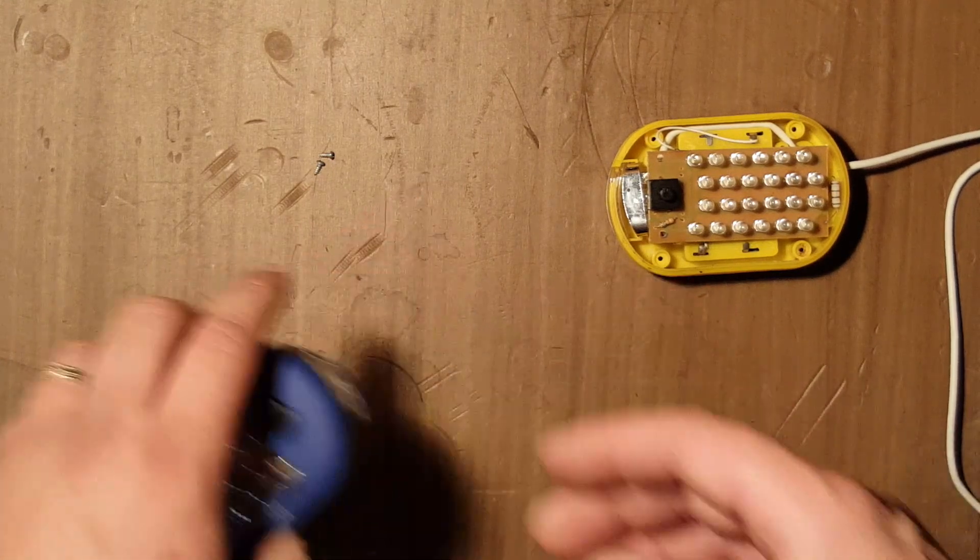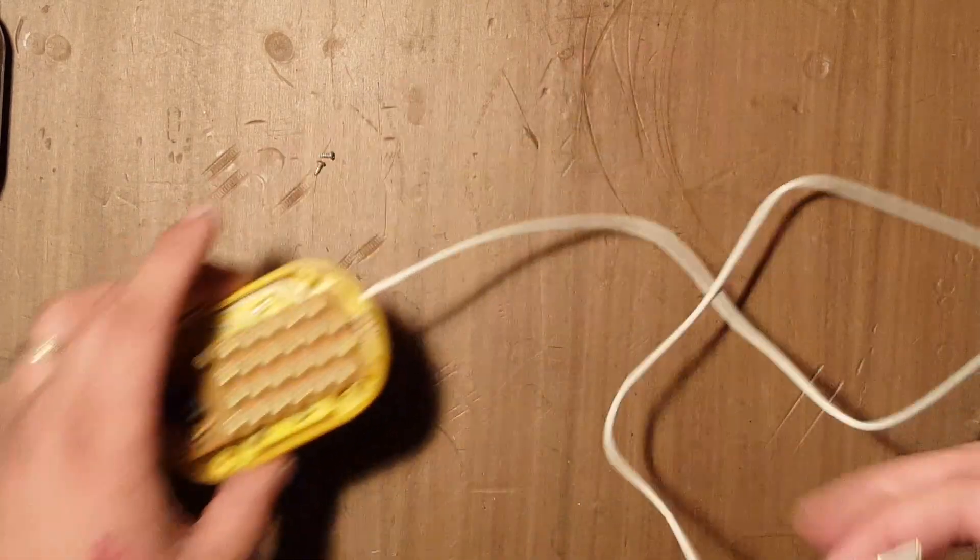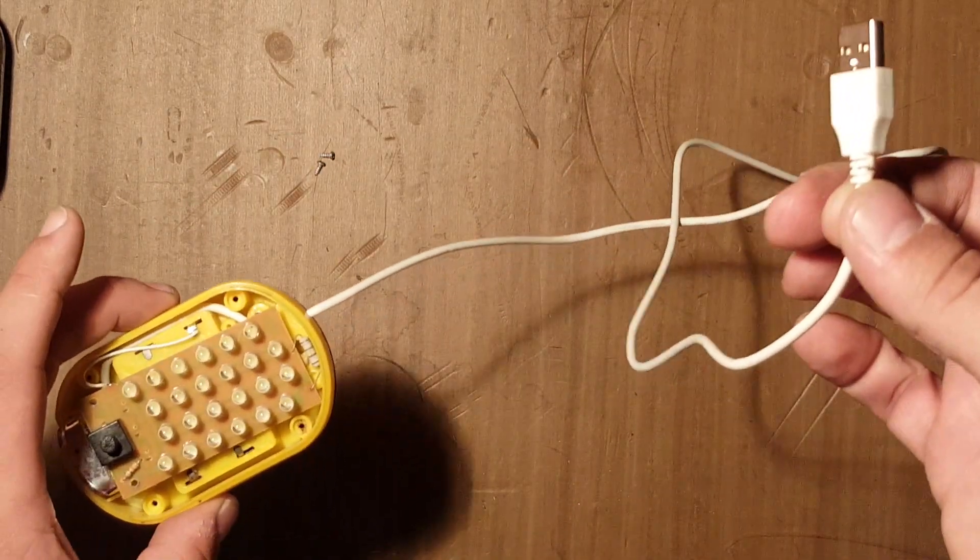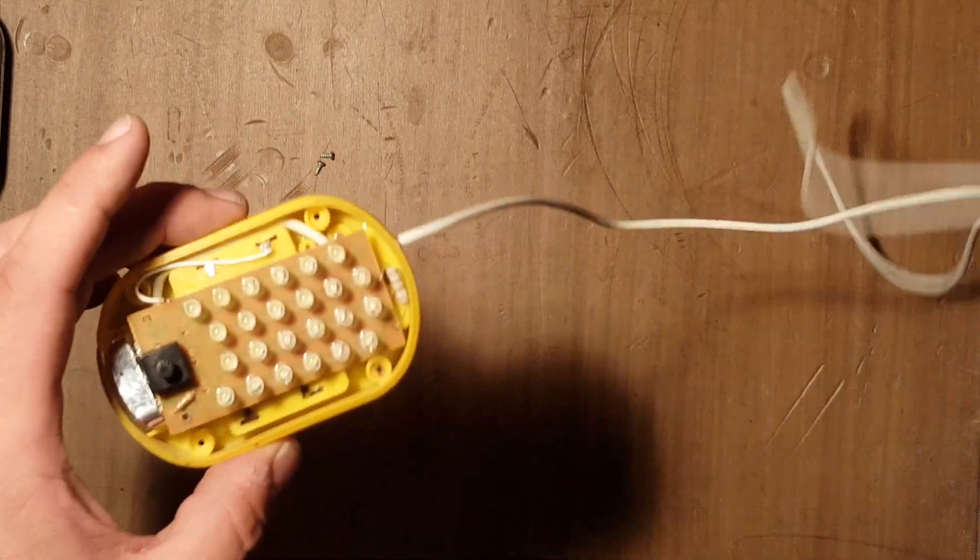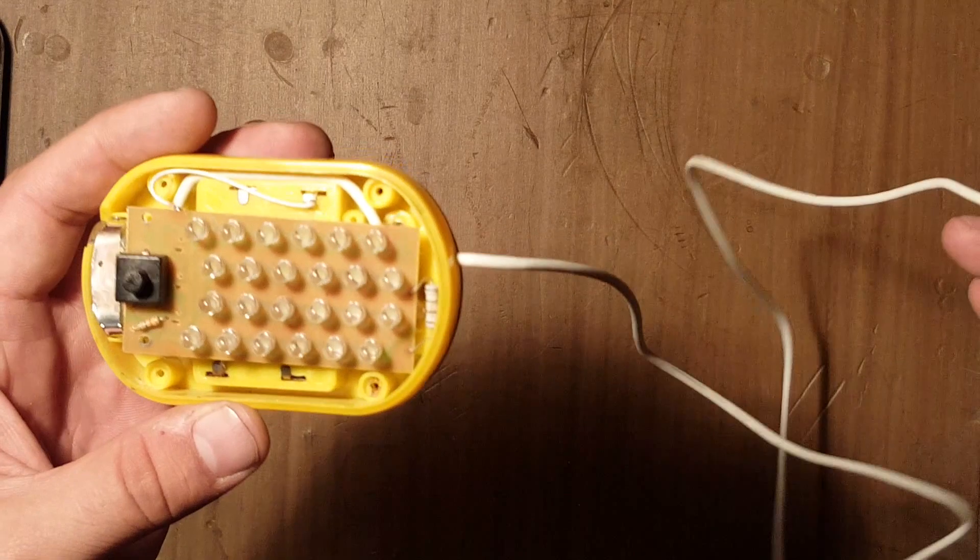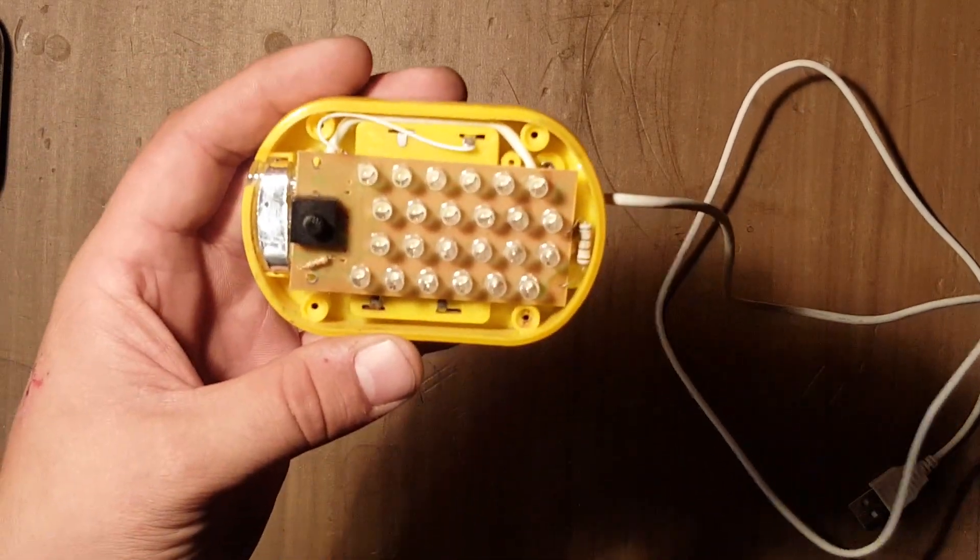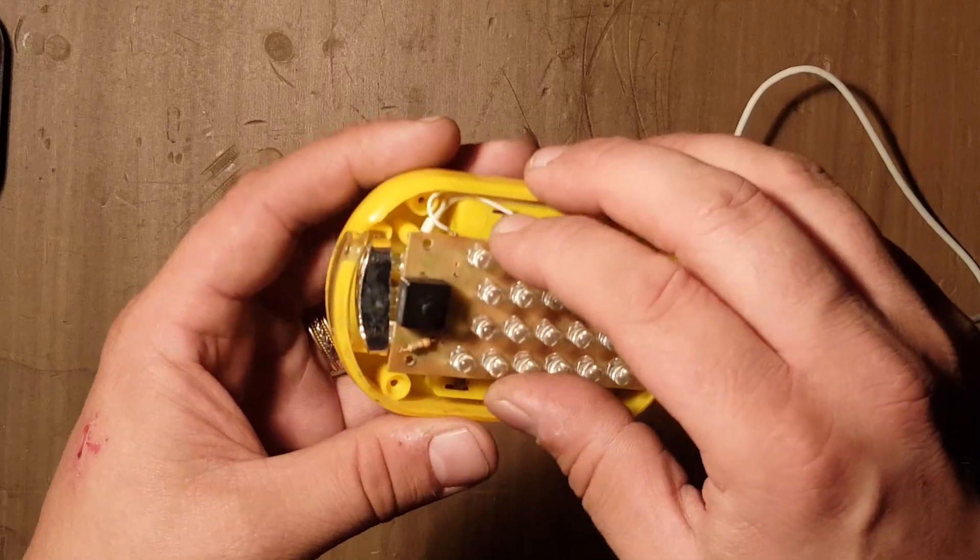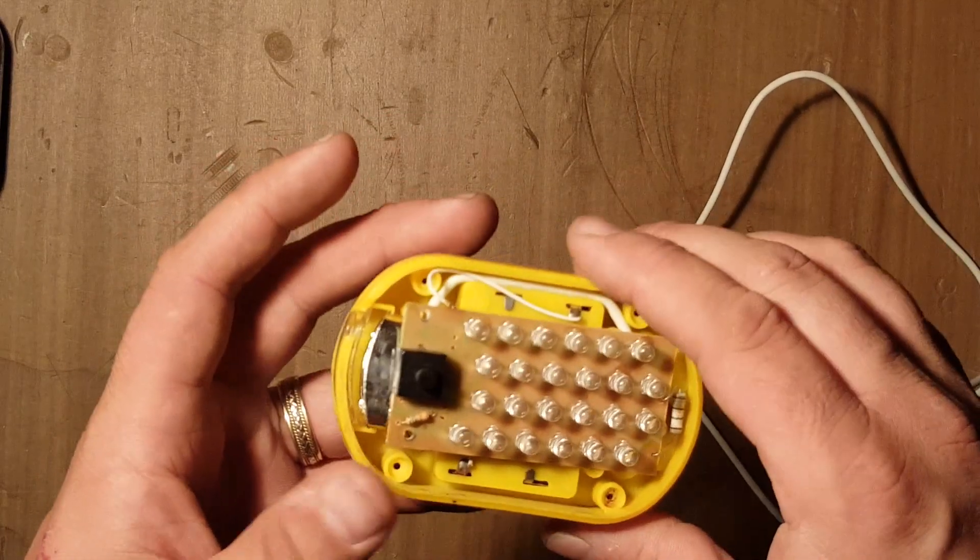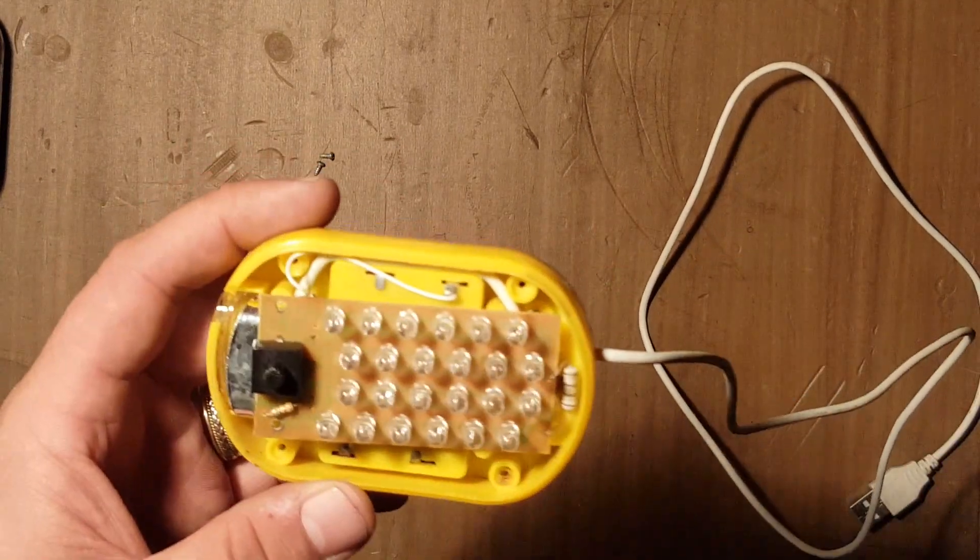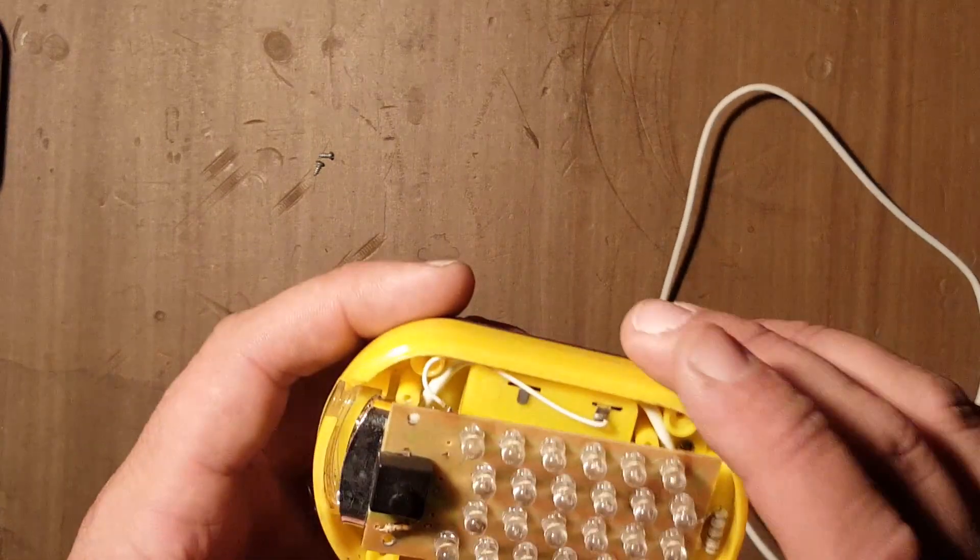And so what I ended up deciding to do was to make it USB powered. USB typically runs on five volt DC power, and so I assumed that the resistors inside of the light would be okay to take care of the voltage difference between the three AAA and the USB power.